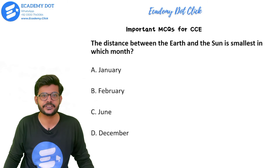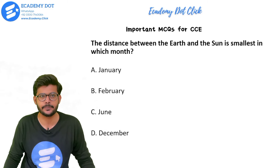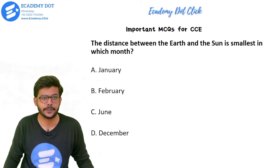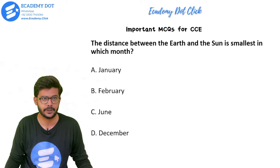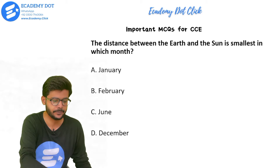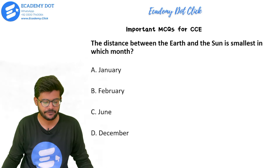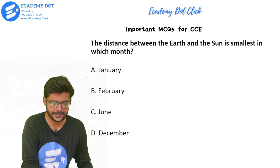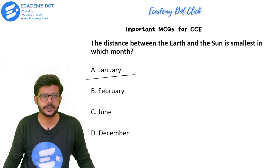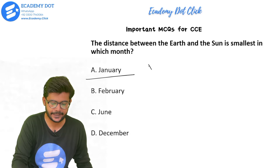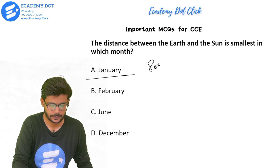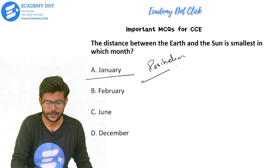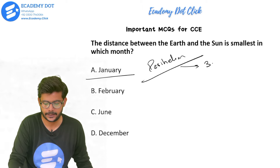Coming to the very first question: the distance between the earth and the sun is smallest in which month? Options are January, February, June, or December. The right answer is option A, that is January. We call this perihelion, which occurs on the 3rd of January.